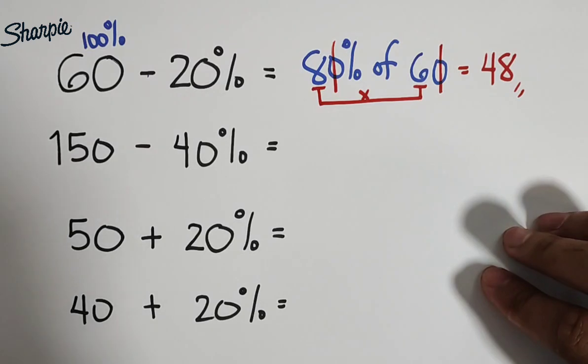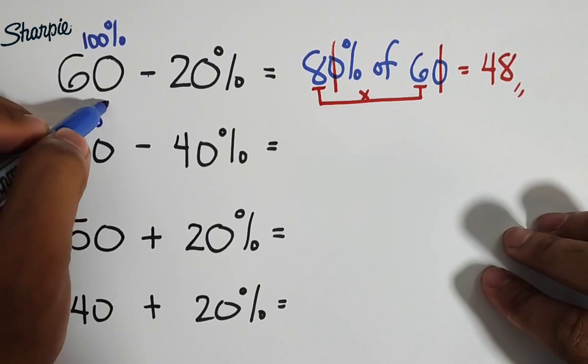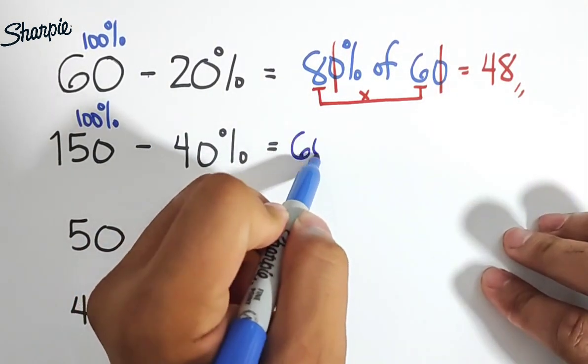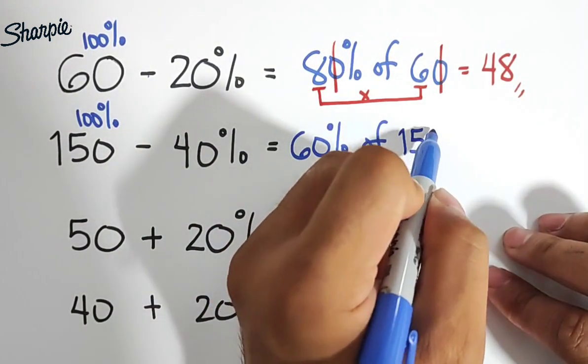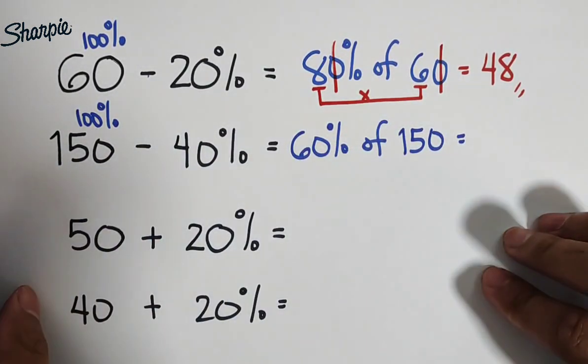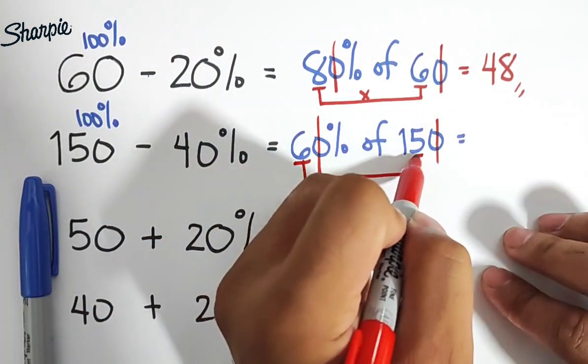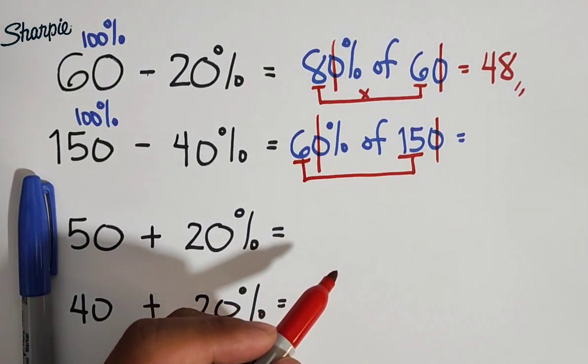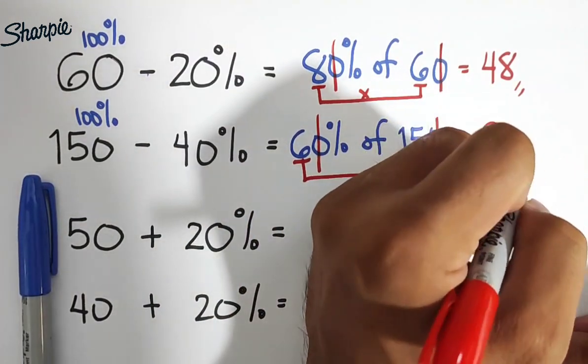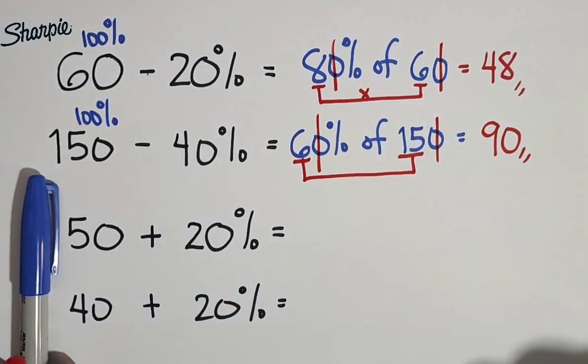Next, we have here 150 minus 40%. This is 100% minus 40. So we have now 60% of 150. So what we need to do here is that we will eliminate 1, 0, and 1, 0, multiply these numbers, 6 times 15, and 6 times 15 is what? Okay, you can multiply it on your own. 6 times 15 is equal to 90. Therefore, 150 minus 40% is equal to 90. Now let's continue.